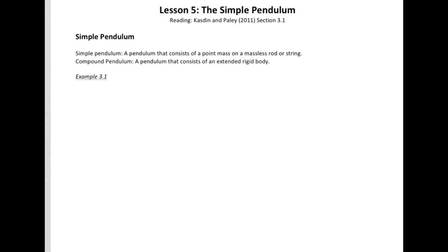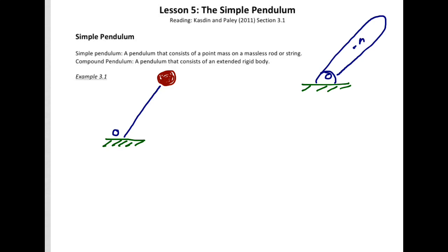It's important to distinguish what we're talking about: something fixed at point O with a mass at the end. We are not discussing a rigid body where mass acts at the center of mass — that's called a compound pendulum. A compound pendulum has an extended rigid body with mass distributed along it.